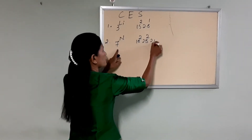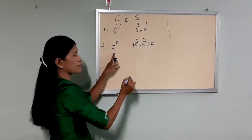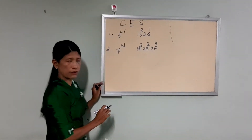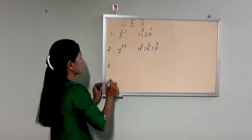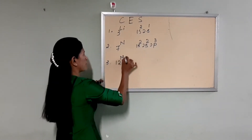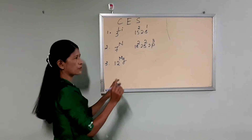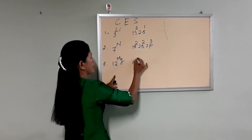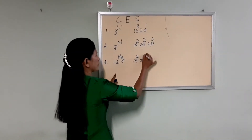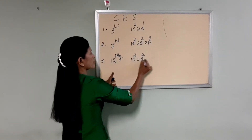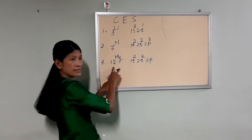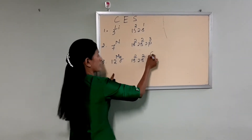Then 2p, 2p. Then 3p: 1p, 1p, then 2p. Followed by 1s, 2s, 2p, 3p, and 2p.